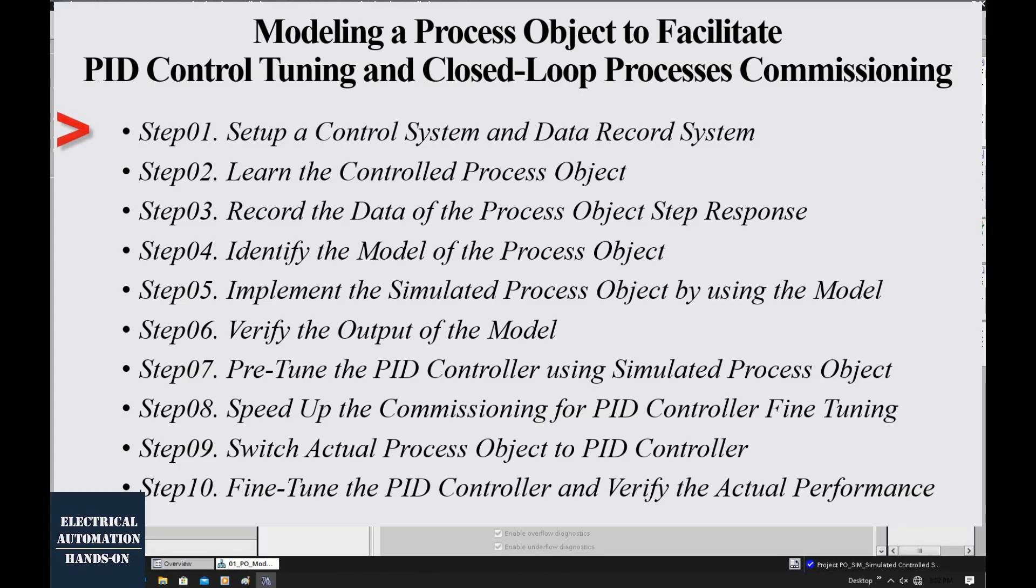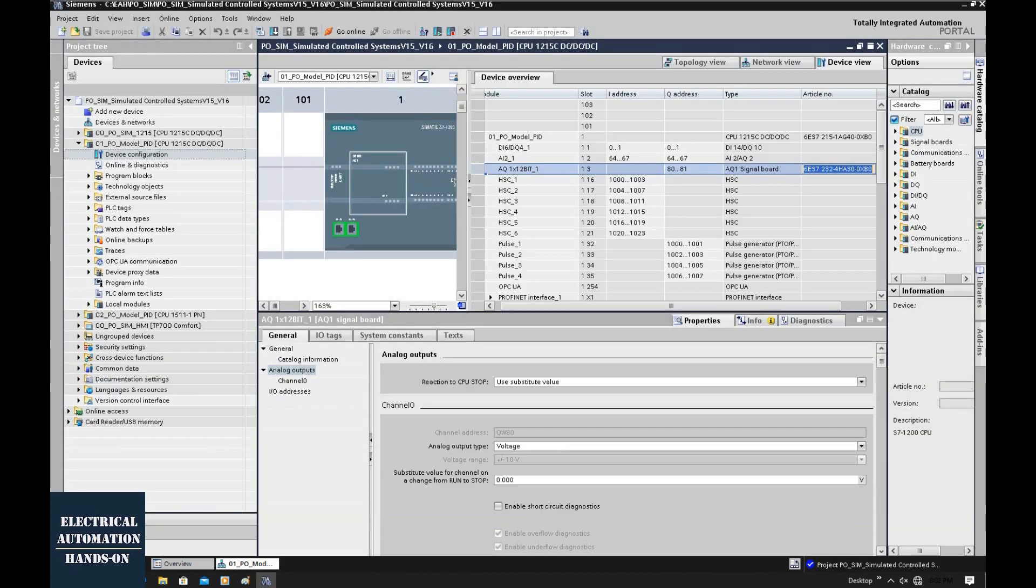The first step is to set up your control and process object system. You need to prepare the analog input with sensors and analog output with actuators to control the process object. The control system requires analog input and output channels. You should also prepare the HMI system for monitoring, especially for data recording and data trending.